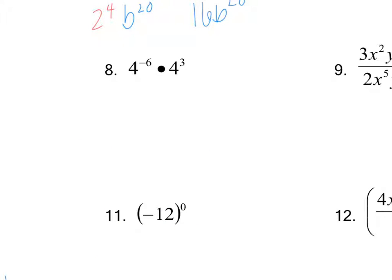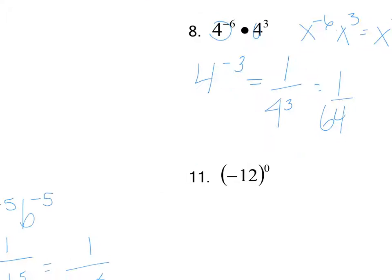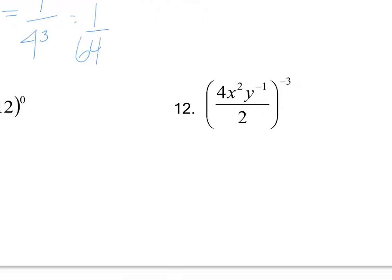Example eight: if you had x to the negative six times x to the third, you add the exponents and leave the x the same. The same applies for numerical values — please do not multiply the actual bases. Keep the base the same and just add the exponents. Since we don't want negative exponents, move it over the line and change the sign: this comes out to be one over 64.